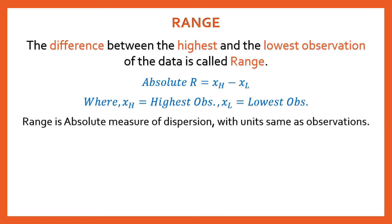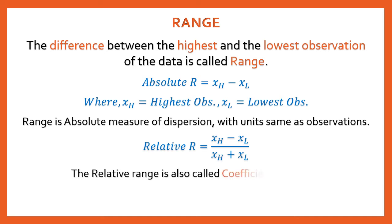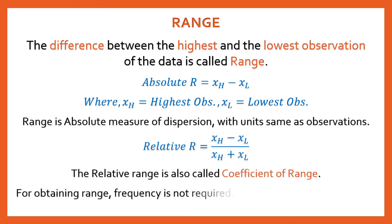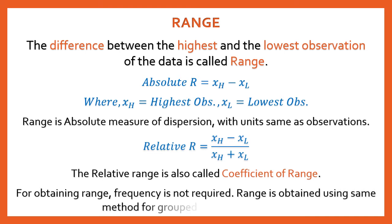Since range has units, we can't use it to compare — so we calculate its relative measure, called Relative Range or Coefficient of Range. The formula is: (XH − XL) / (XH + XL). For obtaining range, the frequency is not required. The formula for range is the same for both grouped and ungrouped data. We will understand this directly through examples.